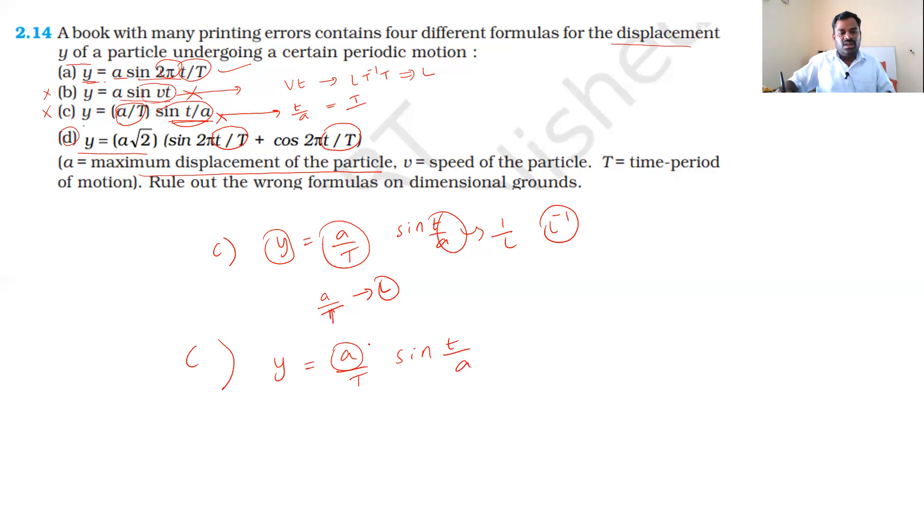For d, y equals a/2 sin 2πt/T. A is in meters, a/2 is also meters. T/a would make it dimensionless if we consider it properly. So b and c are not correct. A and d are correct.